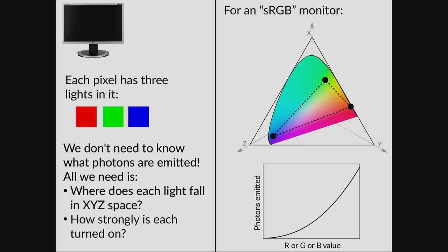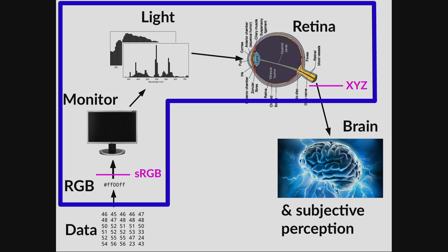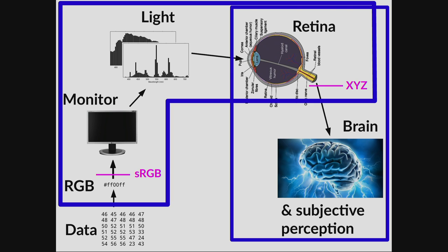If you send a value like 10 or 50 or 100, it doesn't actually turn on 10 or 50 or 100 times more photons — there's a nonlinear mapping. That's because of how old cathode ray tubes worked, and now we emulate them in software. If you know these two things — the sRGB standard and that gamma curve — then for any given RGB values you can convert to XYZ coordinates. Now we can take data all the way to XYZ. We just need to figure out how to get from XYZ to perception.